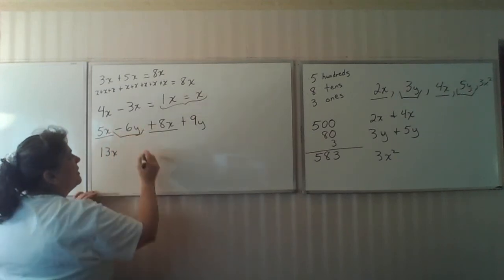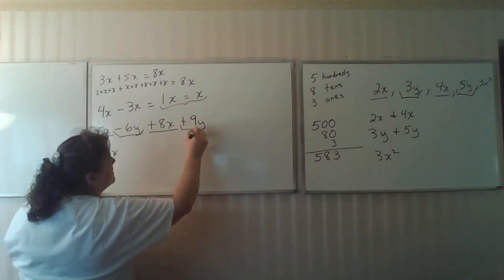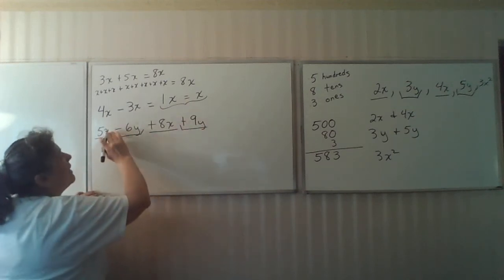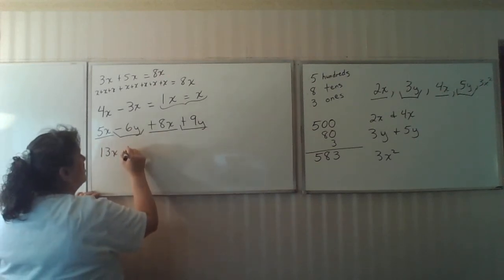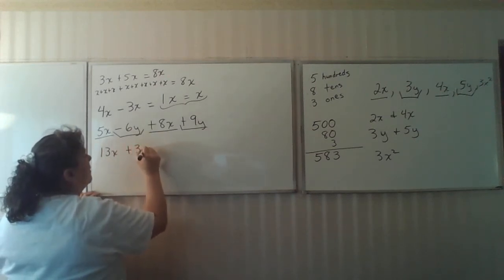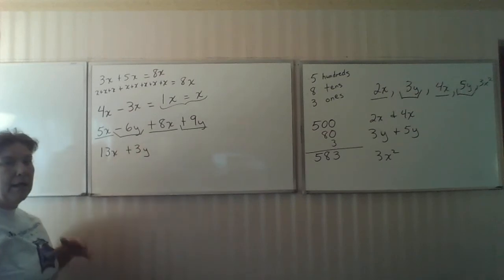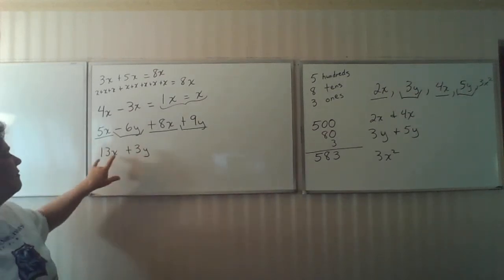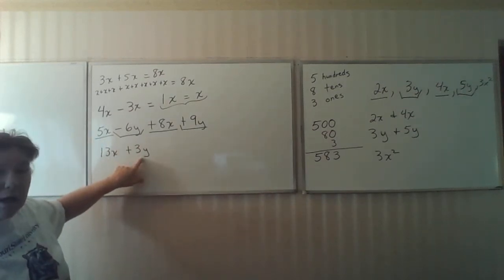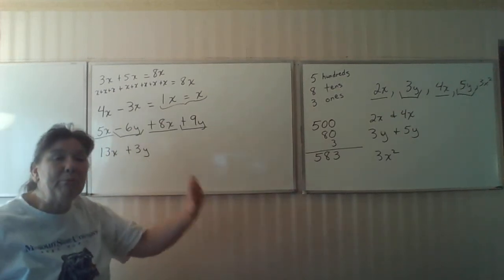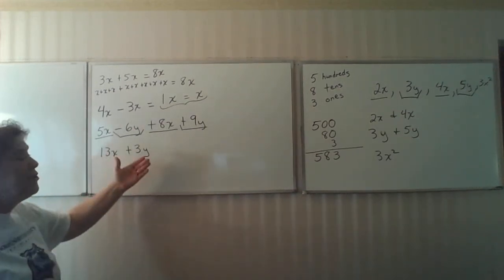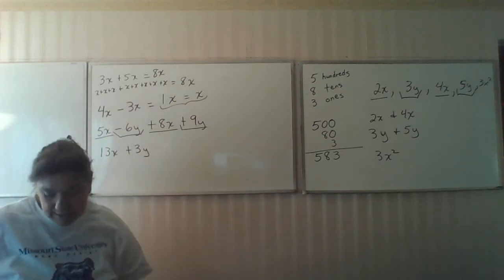Negative 6y plus 9y is plus 3y. And notice, I don't have a one number answer. Why? Because I have variables, and the variables don't permit you to have a one term or one number answer.